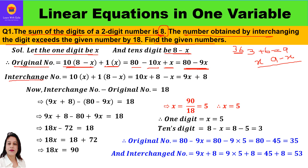Now for the interchange number, we multiply 10 with the ones digit (x) and 1 with the tens digit (8 minus x). Opening the brackets: 10 into x is 10x, and 1 into (8 minus x) is 8 minus x. So 10x minus x plus 8 gives us 9x plus 8 as the interchange number.